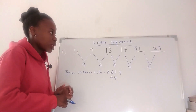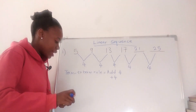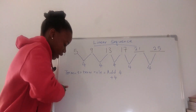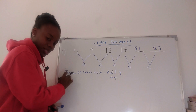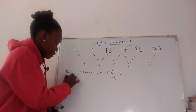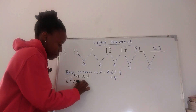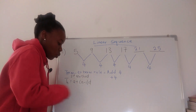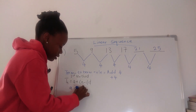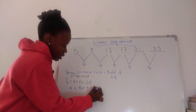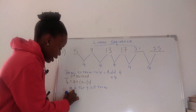Now let's find the nth term expression for number one. The first method: Tn equals a plus (n minus 1) times d, whereby a is the first term and d is the difference. In this sequence, a is 5, and n is the position — for example, 13 is in the third position, 9 is in the second position.